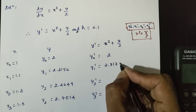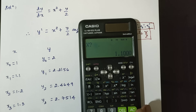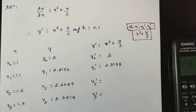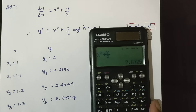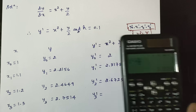From the table: at x2 = 1.2, y2 = 2.4649, y2' = 2.6725. At x3 = 1.3, y3 = 2.7514, y3' = 3.065.